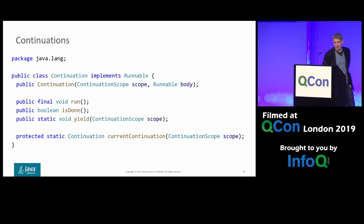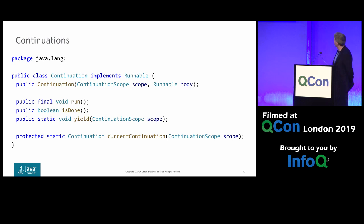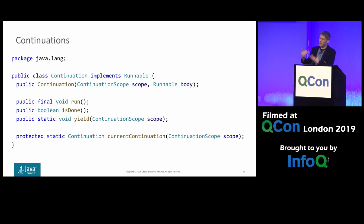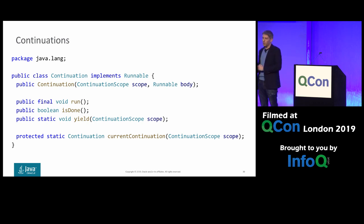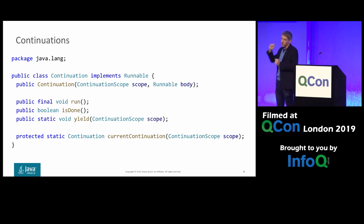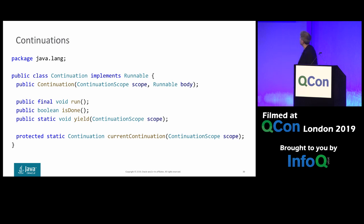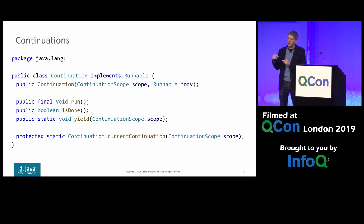As part of Project Loom, we've implemented continuations in the JVM, exposed as a class. The continuation has a body — the code that will be able to suspend itself — and we run it. When run, it executes until completion or until it calls yield. In either case, run returns, with no concurrency — everything runs on the same thread. If the body yielded, isDone returns false; if it terminated, true. The scope mechanism allows nesting different continuations inside one another, enabling suspension of multiple continuations and jumping back multiple callers — similar to how we throw exceptions up the stack.